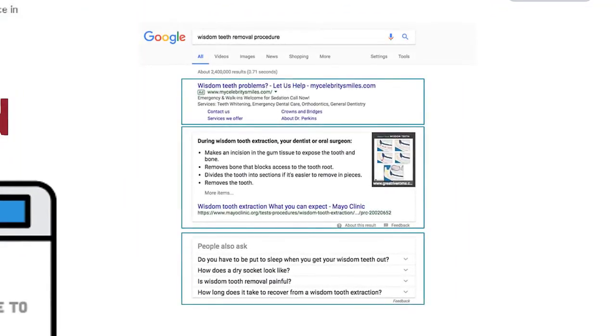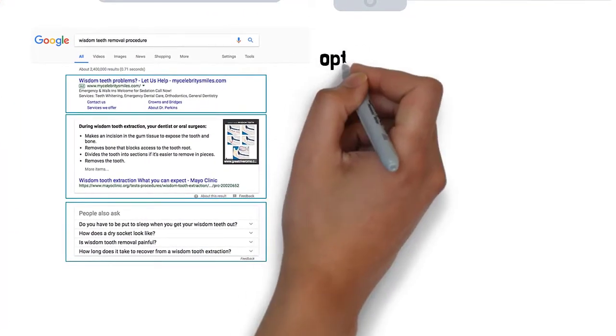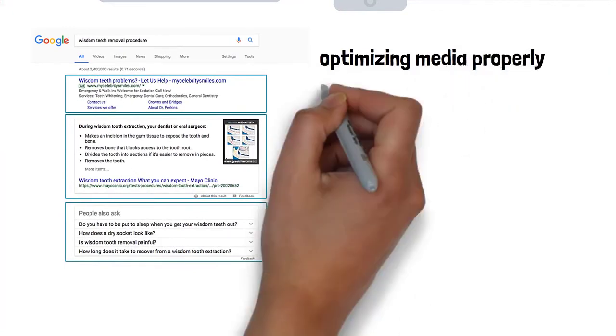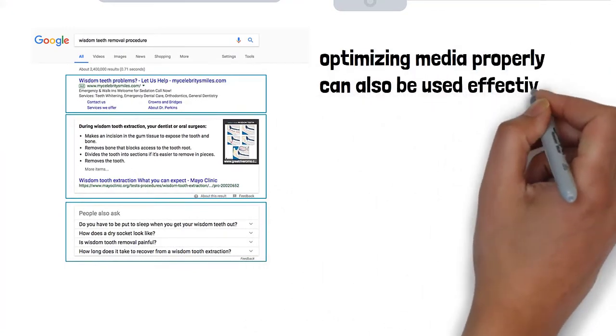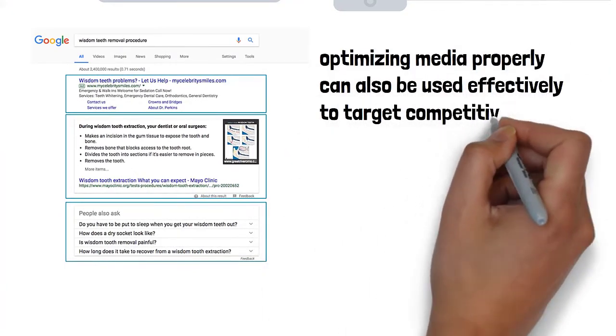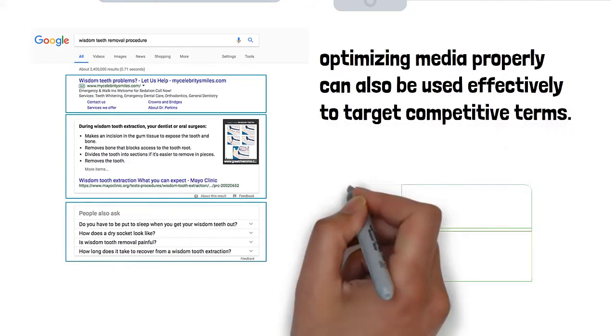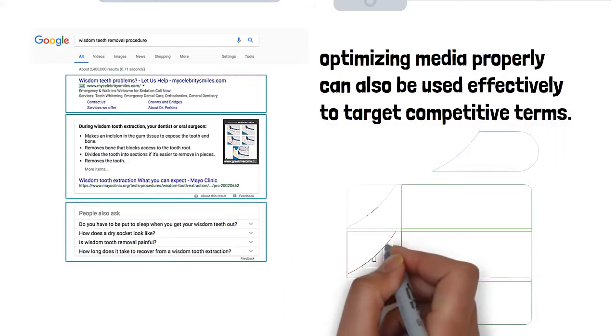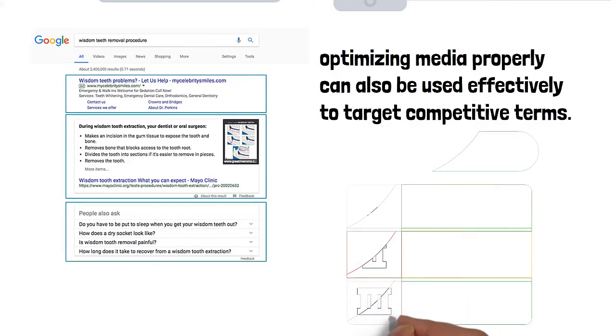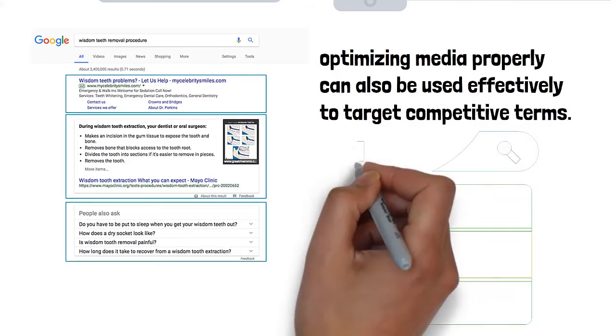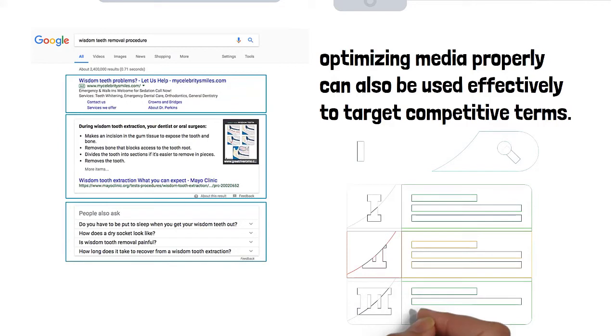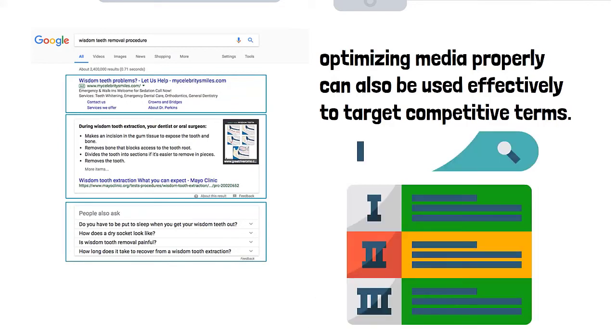Additionally, images and videos are also shown on the SERPs. If you optimize media properly, it can give your brand more ownership of the SERP real estate, which is basically the goal. Additionally, optimizing media properly can also be used effectively to target competitive terms. This method also helps search engines to rank your pages accordingly as long as each media is labeled correctly. It also helps emphasize the content on a page to a website visitor.